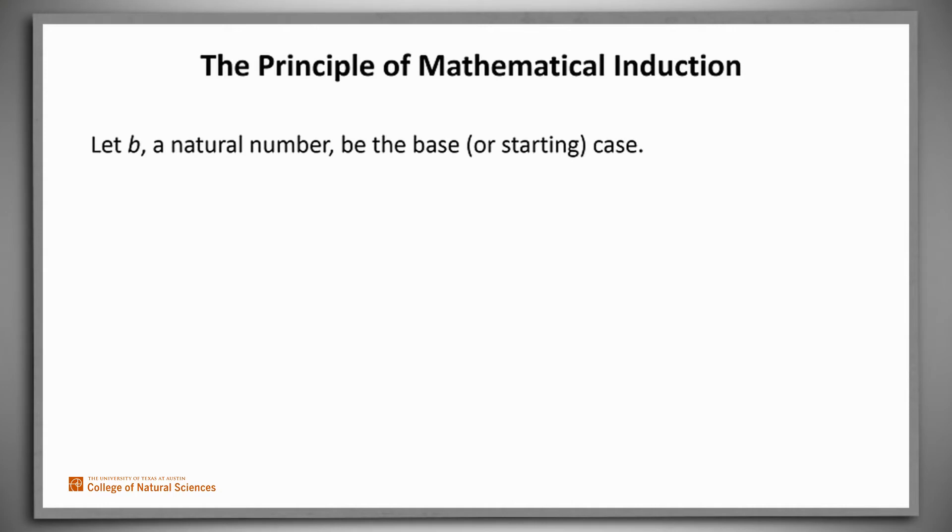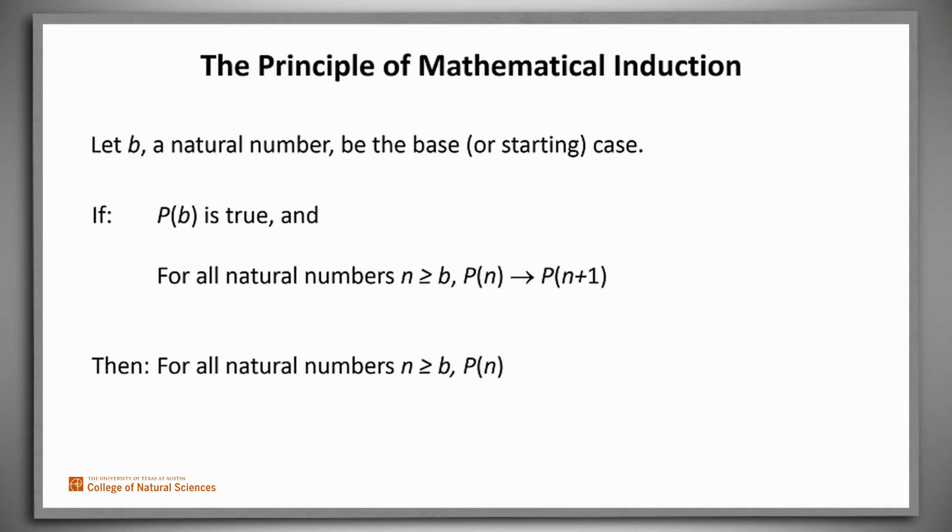Here's the rule. Let B, a natural number, be the base or starting case. It's usually 0 or 1, but it doesn't actually have to be. Then if P of B is true, and for all natural numbers n greater than or equal to B, P of n implies P of n plus 1, then for all natural numbers n greater than or equal to B, P of n.